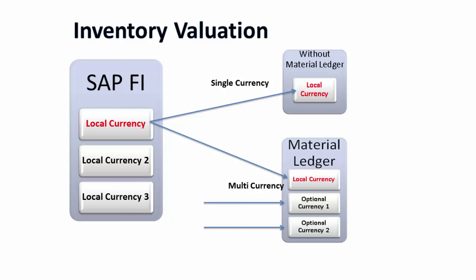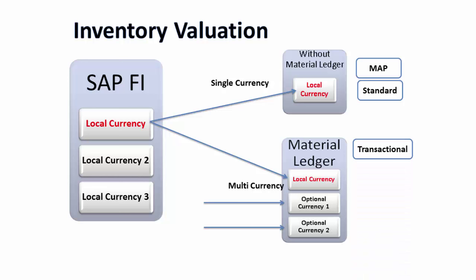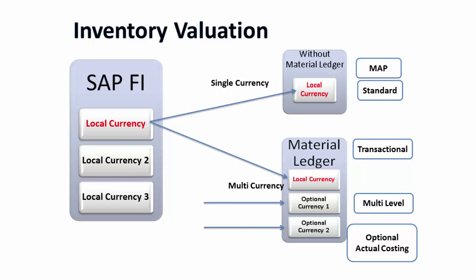When you think of inventory valuation from a costing perspective, you can use a moving average price or standard cost. When it comes to material ledger, it supports moving average price and standard cost as well. If you have actual costing, you can use multi-level price determination, and optionally you can have actual cost. These are the different elements which are part of your inventory valuation.